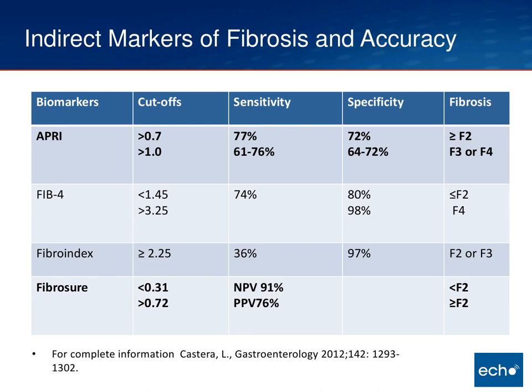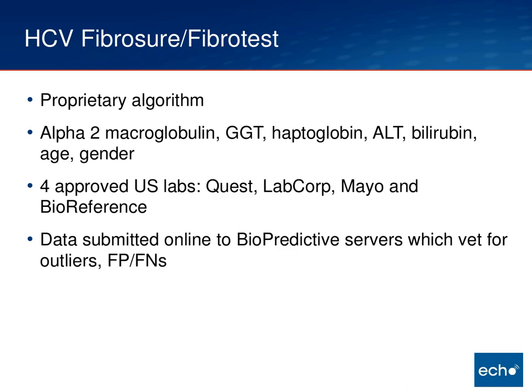FibroSure is a proprietary algorithm created by French researchers about 15 years ago. The components are alpha-2 macroglobulin, GGT, haptoglobin, ALT, bilirubin, and then age and gender. There are four labs in the United States approved to run this test: Quest, LabCorp, Mayo, and BioReference — locally our lab sends it to Mayo. Once those labs are run, the data goes to a server in France run by a company called BioPredictive, which vets for outliers or obvious false positives or negatives, and then the result comes back to you. That's why it takes about a week to get the result.